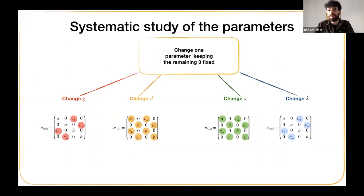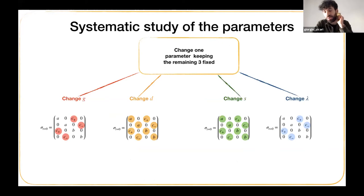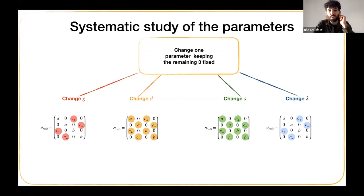We then perform a systematic study of the parameters. The idea is straightforward: we have four different parameters to initialize the system, and we change one at a time while keeping the other three fixed. For example, changing G modifies the global purity of the two-mode system, acting on the off-diagonal blocks. Changing D alters the asymmetry between the two modes, and so on.